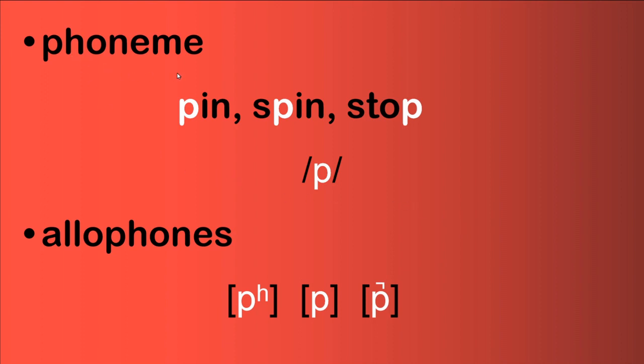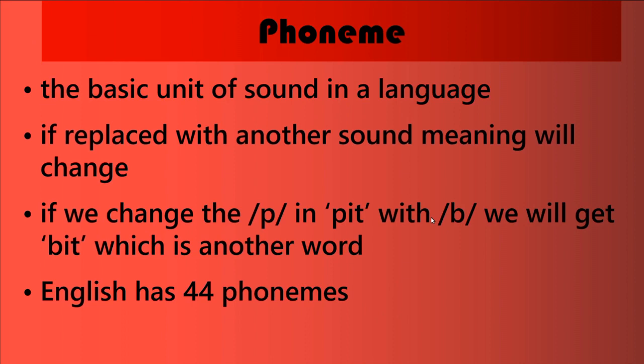That is another allophone of 'puh,' and we show it using a diacritic symbol — a mark put above or below the symbol representing the sound to show the allophonic variation. So the phoneme 'puh' has three allophones. Allophones are variant forms of a single phoneme.